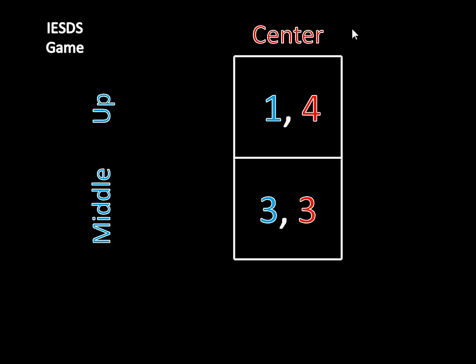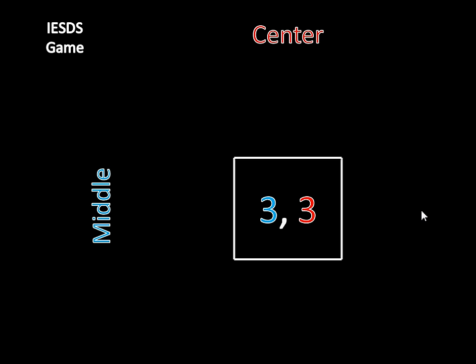If Player 1 knows that Player 2 is super smart and won't play right, and that causes him to never play down, which means she infers he's never going to play down, which means she's never going to play left, and that just leaves her playing center — then this is just a simple optimization problem for Player 1. Player 1 is left choosing between middle or up, and 3 is greater than 1, so he's going to play middle and not up. That leaves us with a solution of middle, center, and they're going to get 3 points apiece in this game.